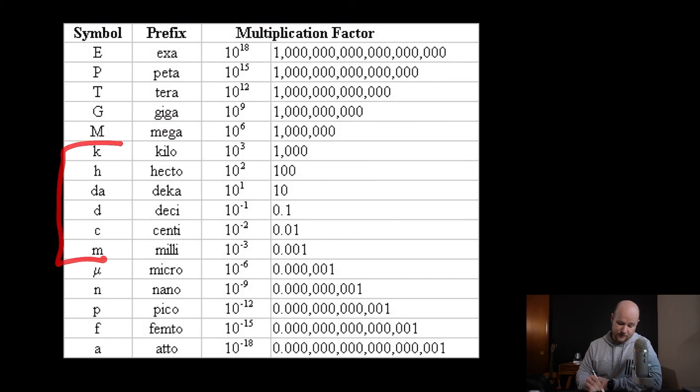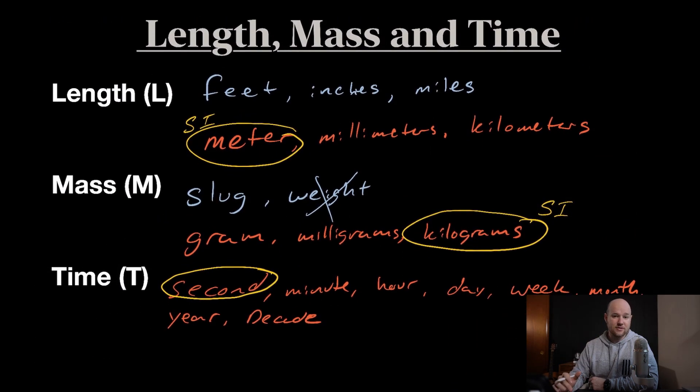Now rarely in physics do any of our length, mass, and times stand alone. What I mean by that is a lot of times we combine them mathematically, and when we combine these units mathematically, it's called dimensional analysis, and that's what I'm going to be talking to you about in the next video.